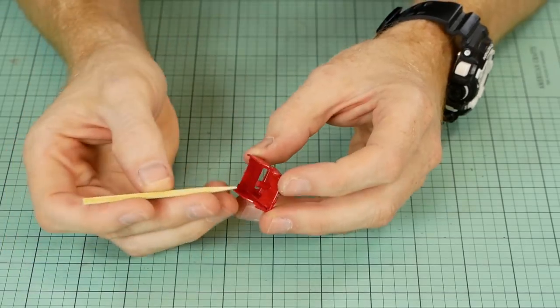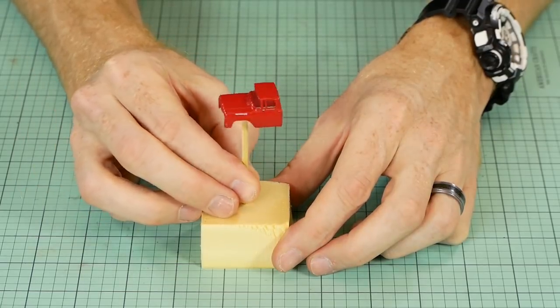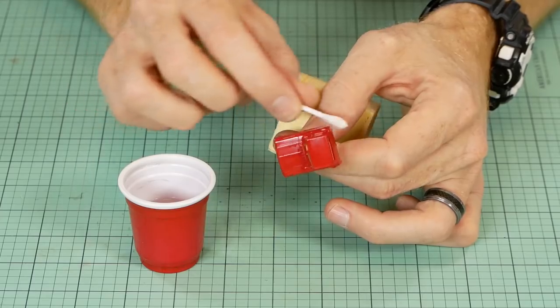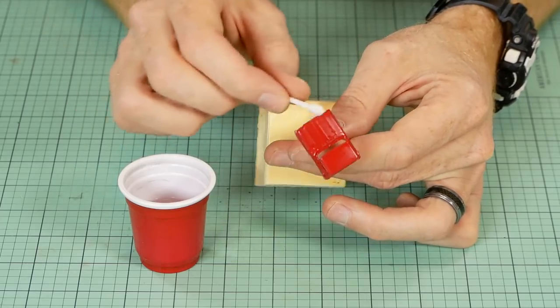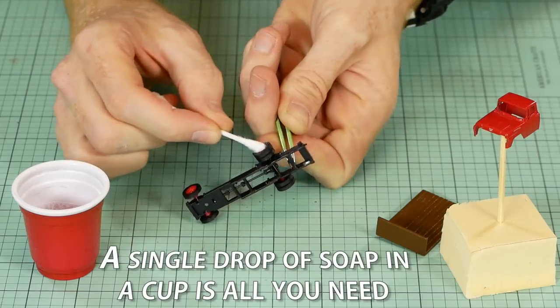In preparation for painting and weathering I firstly mount the model onto a skewer so I don't have to hold it with my hands, and then lightly wash each part with a cotton Q-tip dipped in soapy water. This removes oil, dirt and grease from your fingers.